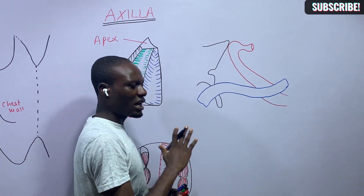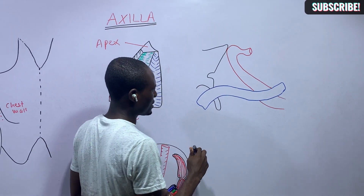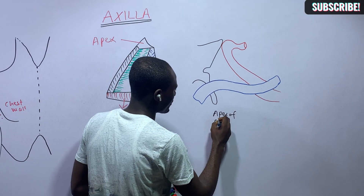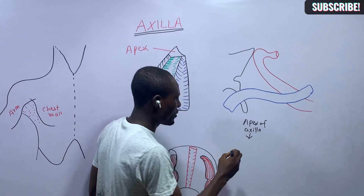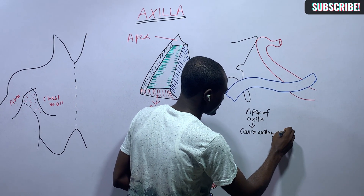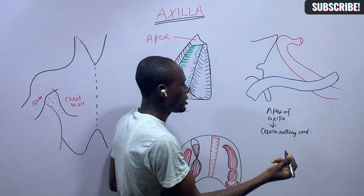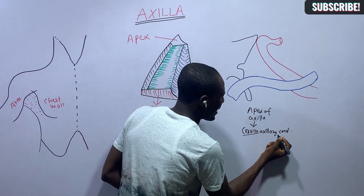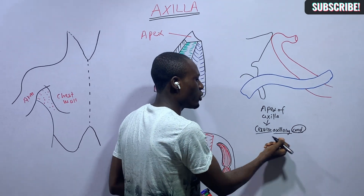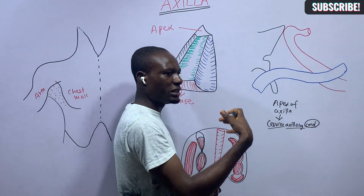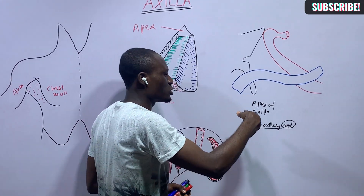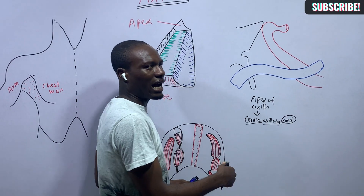The apex of the axilla corresponds to the cervical axillary canal. Structures leaving the cervical region enter the axilla through the space at the apex — that is why it is called the cervical axillary canal. Arteries, nerves, and veins come down from the cervical region, pass through this canal at the apex, and get into the axilla itself.